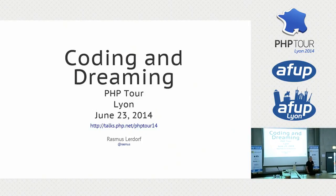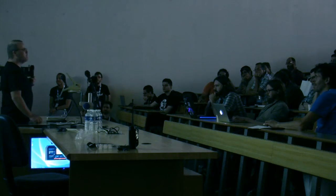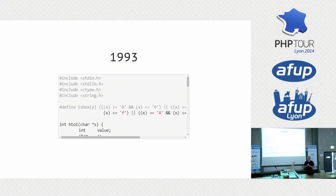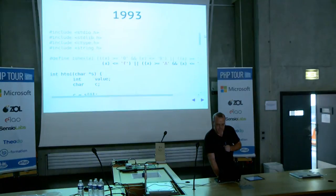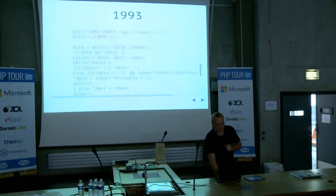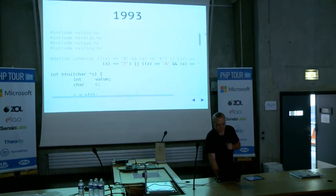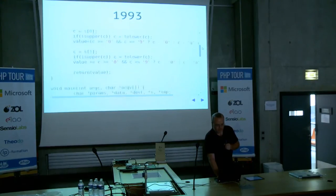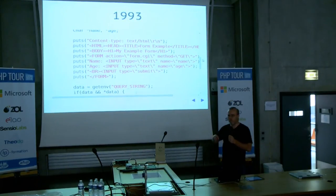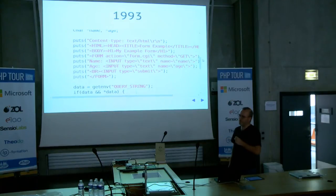We're going to be talking about coding and dreaming this morning. First, lots of coding. I started out doing this stuff many, many years ago. 1993 is when I started first doing web development. And most of my code back then looked like this — it's unreadable. This is a CGI program written in C. You end up writing your HTML inside your C program, so anytime you wanted to change something trivial, you have to recompile and redeploy to the server. It was terrible.